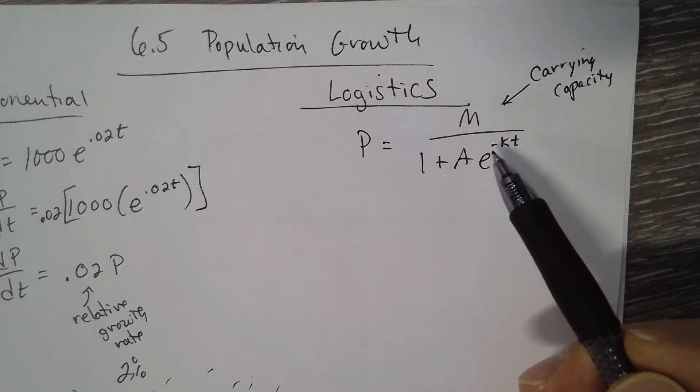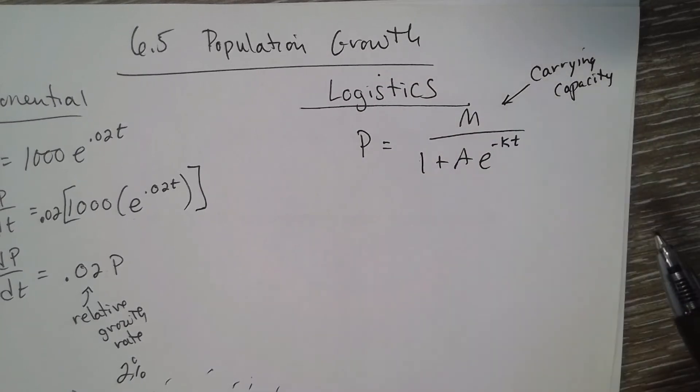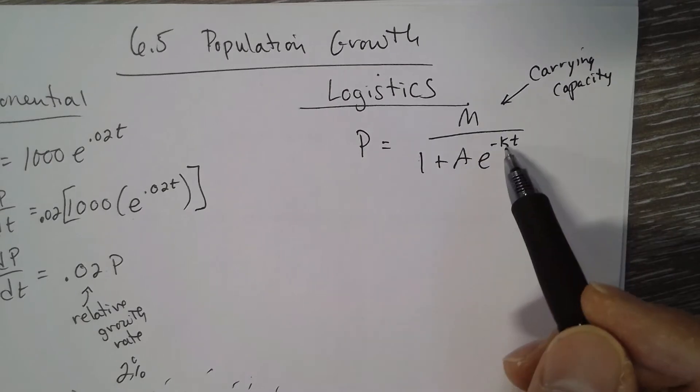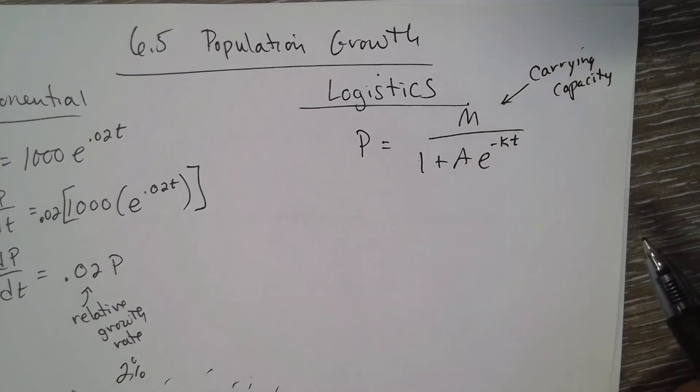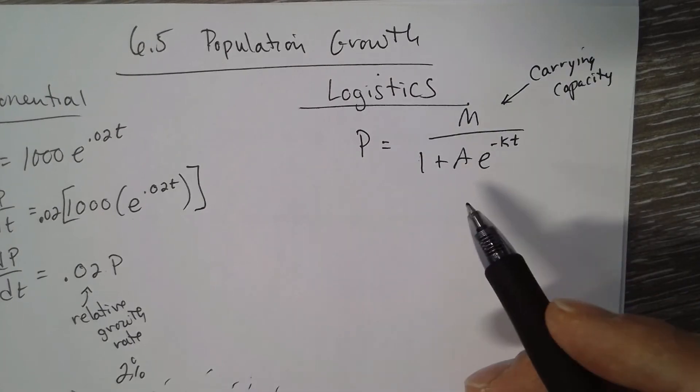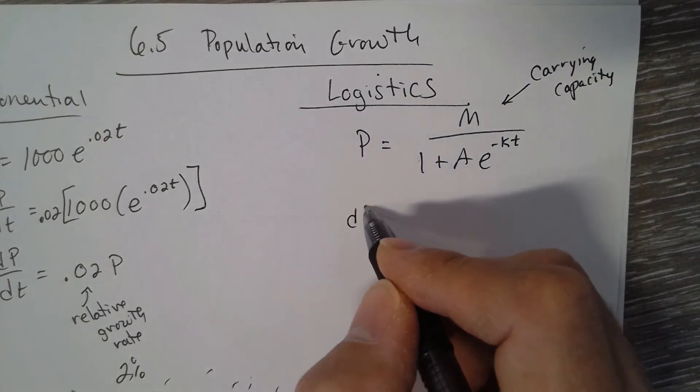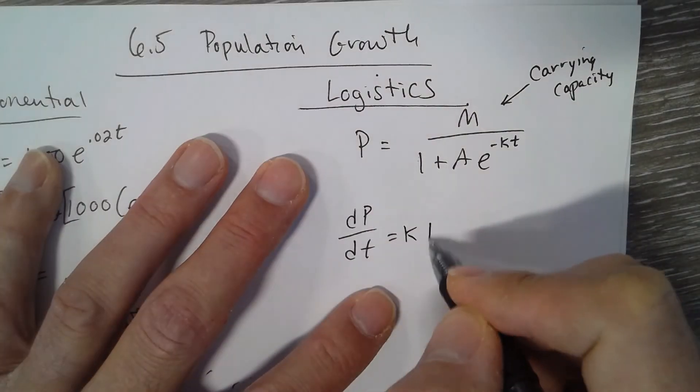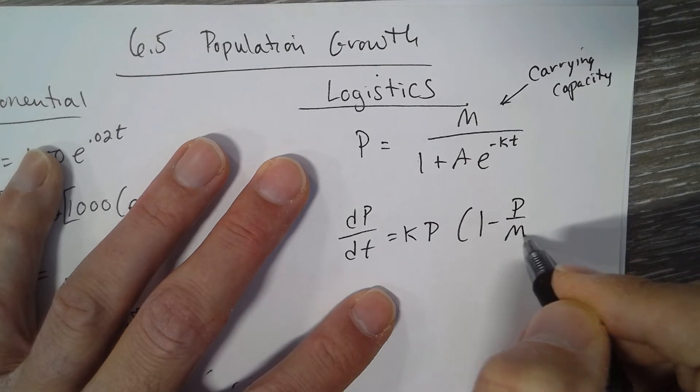The population can't exceed whatever M is. A is just a constant, and k is a constant. t is the time. If you found the derivative, there are a couple different versions of it: dP/dt equals kP(1 - P/M).